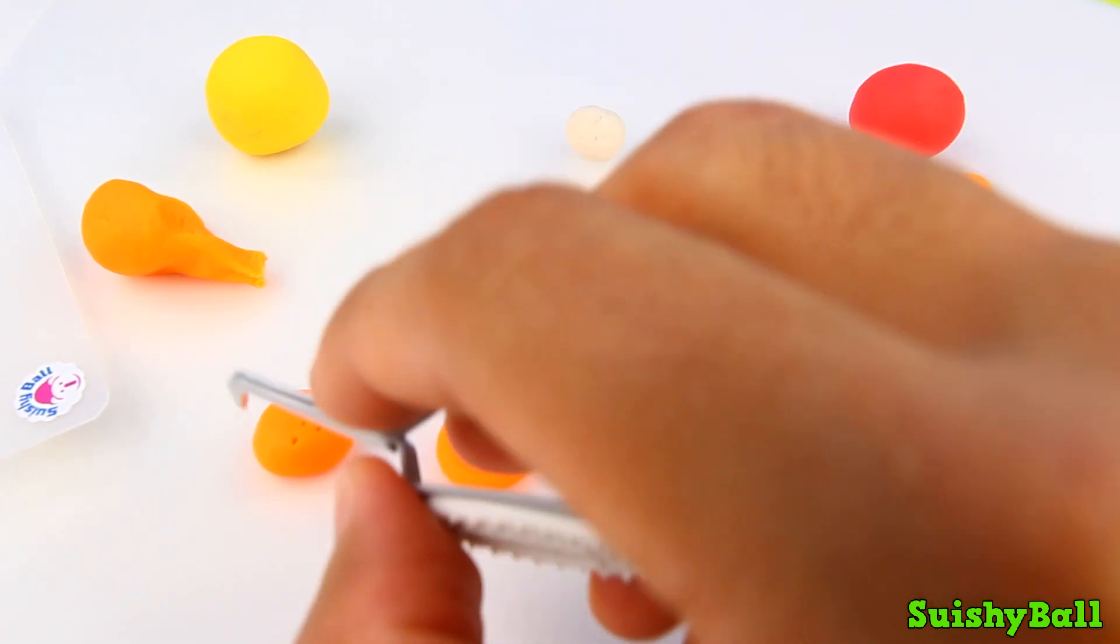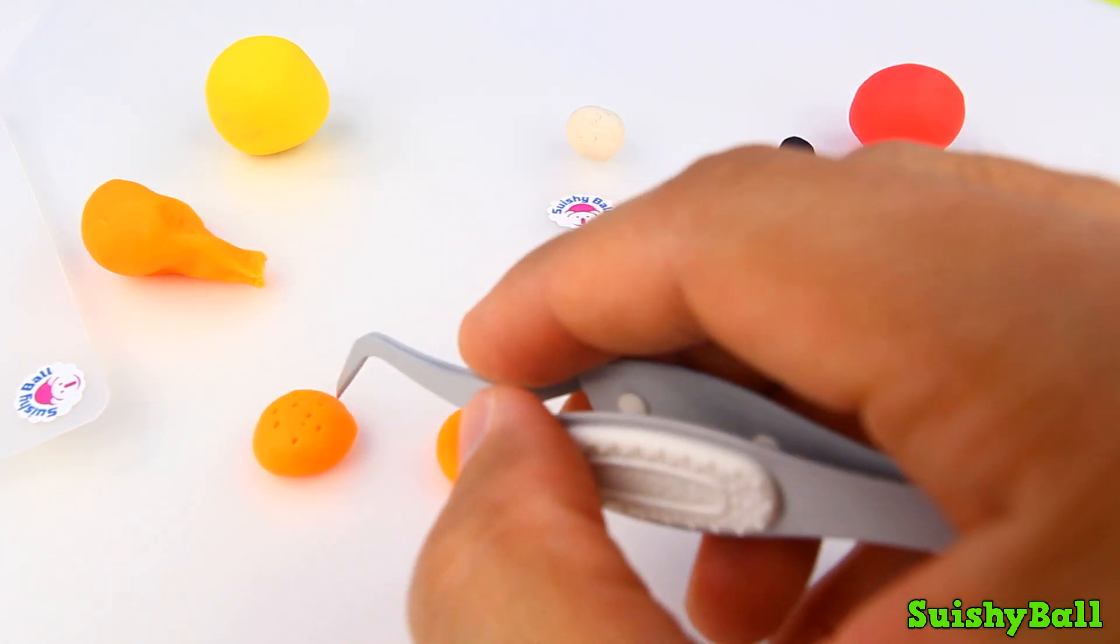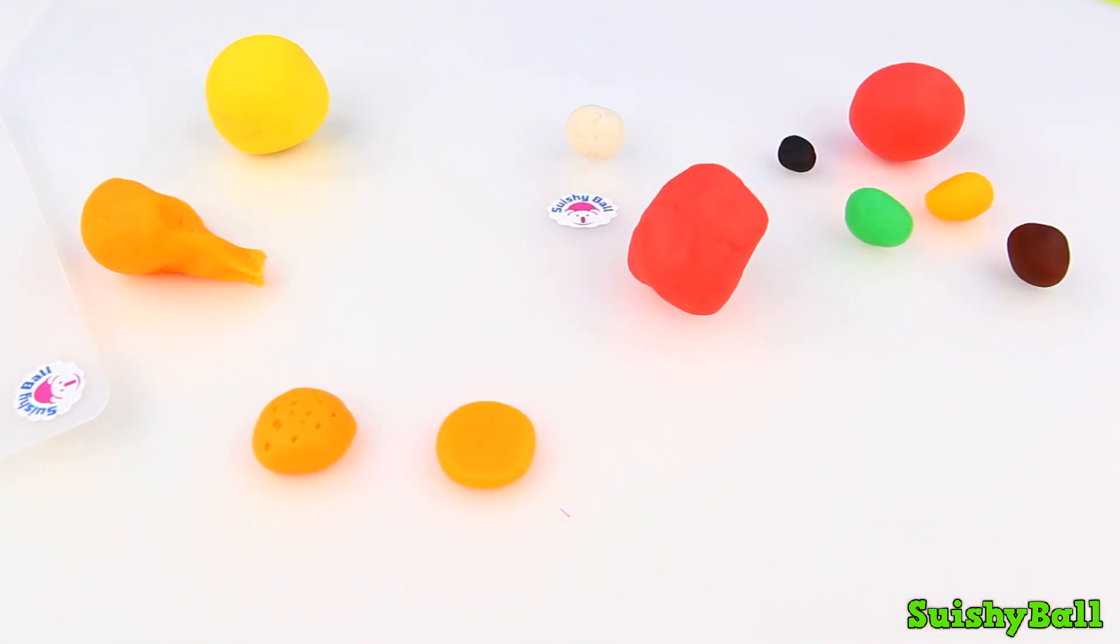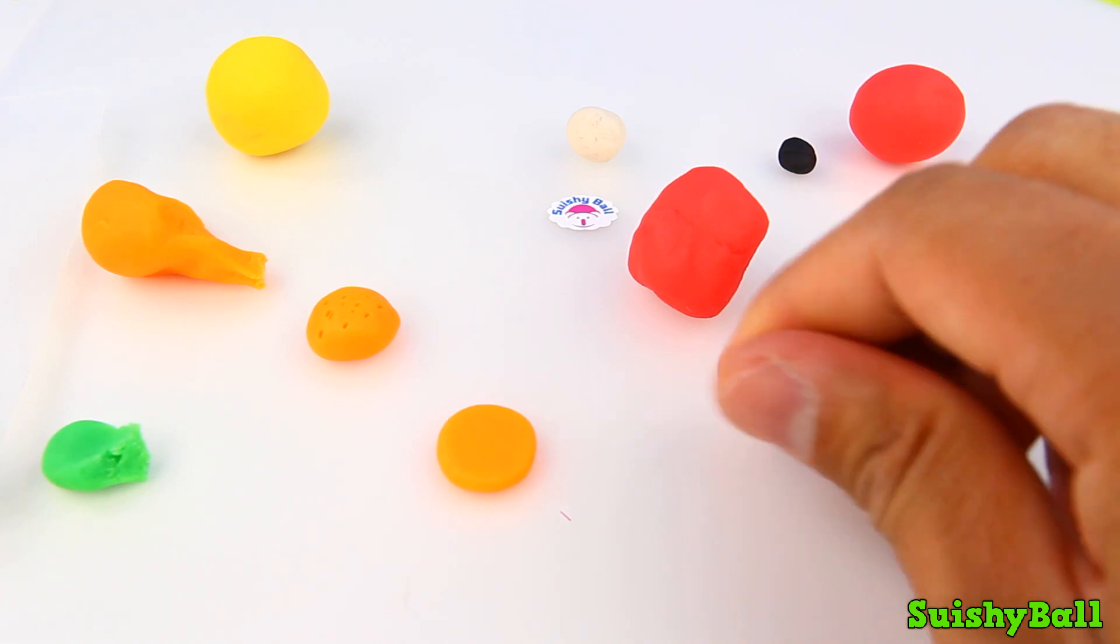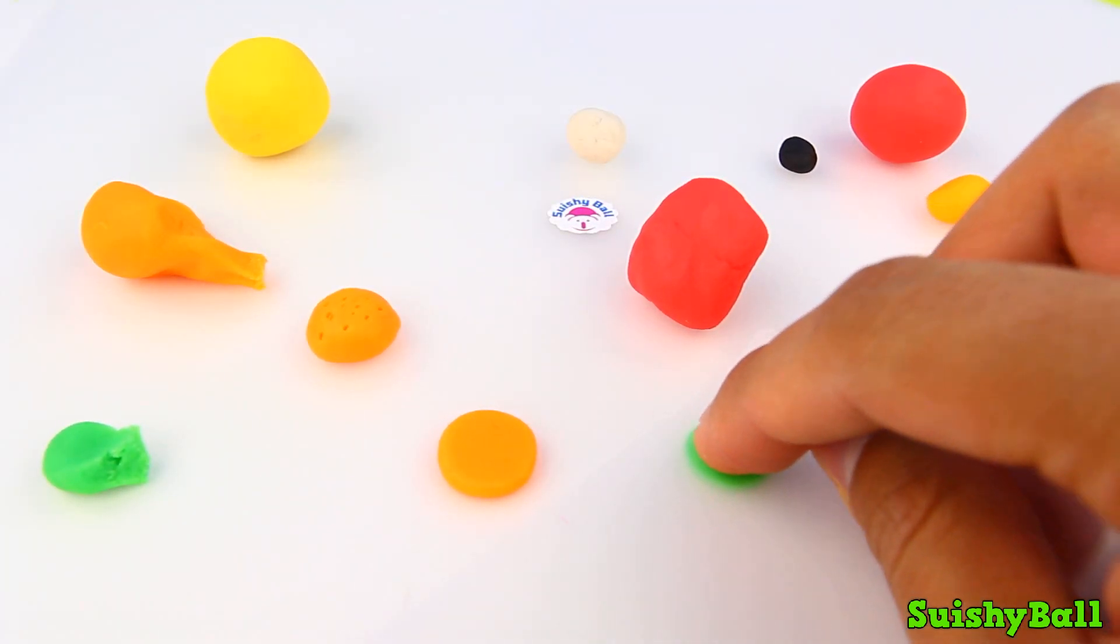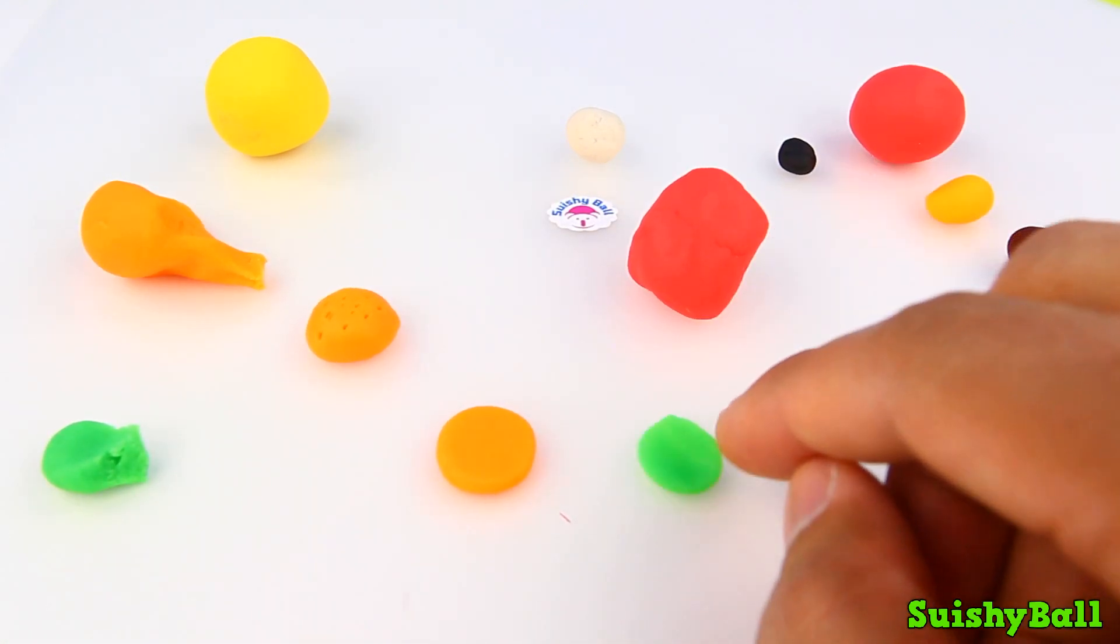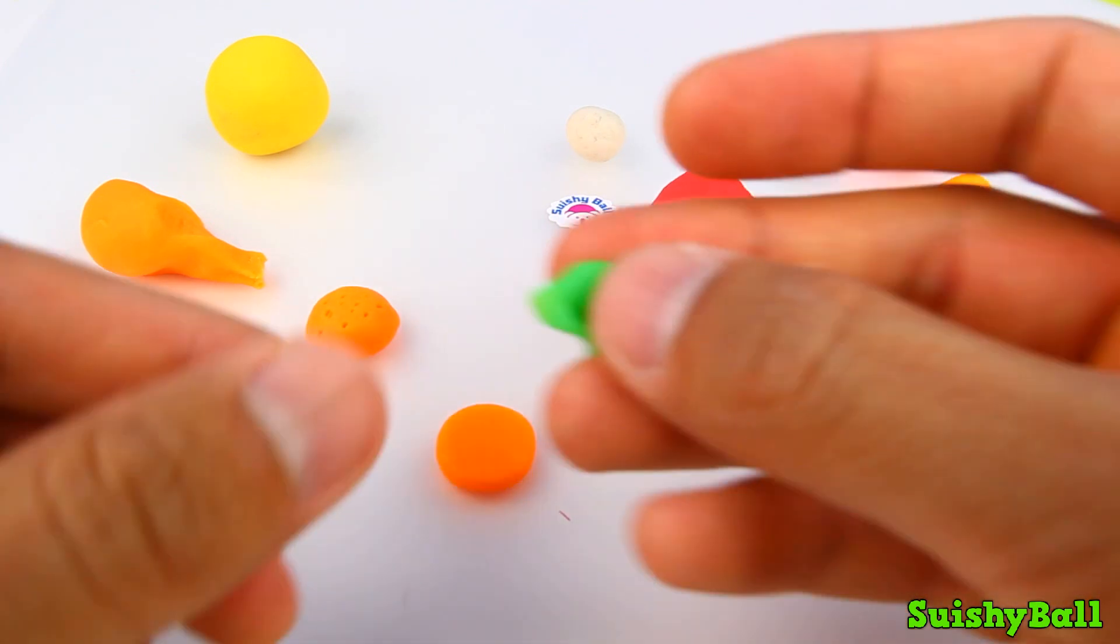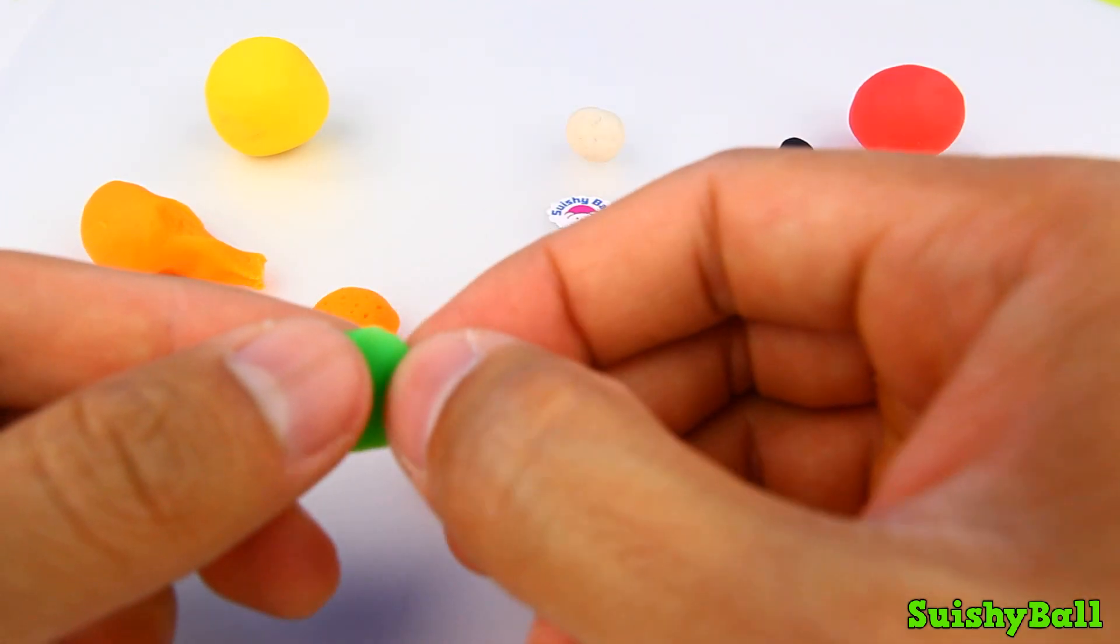To just poke some holes in so that they can look like sesame seeds. Now let me roll out a little piece of green play-doh, and this will be the lettuce. So let me just squish the edges for this green piece so that it can look more like a piece of lettuce.